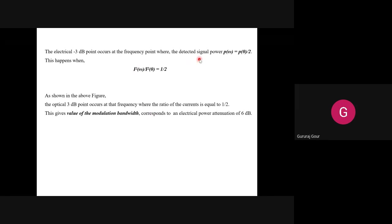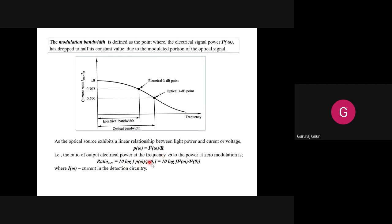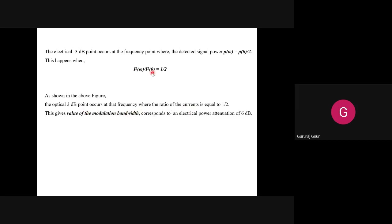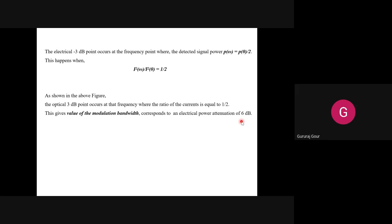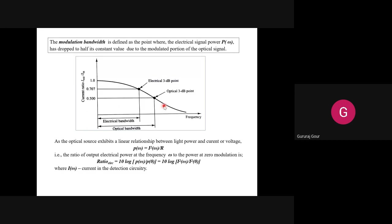The electrical 3 dB point occurs at the frequency where the detected signal power P(ω) equals P(0)/2, meaning the power becomes half. When the ratio of electrical current to the current at zero modulation equals half, we reach the optical 6 dB point. The optical 3 dB point occurs at that frequency where the ratio of currents becomes half, giving us the 6 dB point. So this optical bandwidth normally involves a 6 dB loss of the electrical signal - or equivalently a 60 dB attenuation point.